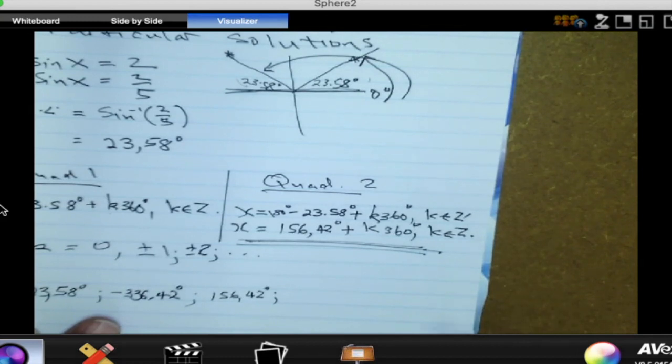Now try K equal to 1. What do you think? If you put K equal to 1, do you see you get an answer bigger than 360? So there is no need to put K equal to 1 because it will give you an answer that is not in the interval.